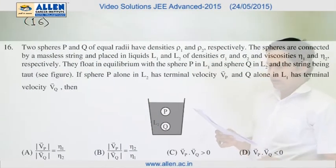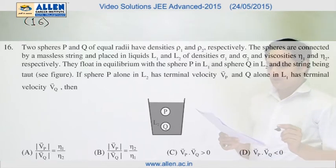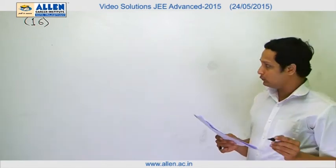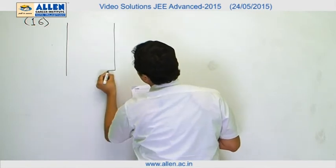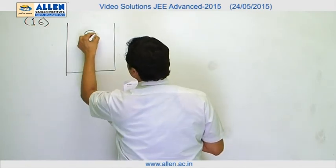Question number 16: two spheres P and Q of equal radii have density rho 1 and rho 2. So we have a liquid in which we have two spheres.